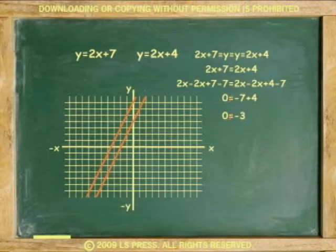Because 0 is not equal to negative 3, the lines will not meet and there is no solution to the system. The lines are parallel.